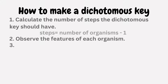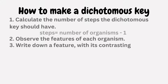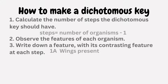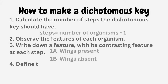Step three: write down a feature with its contrasting feature at each step. For instance, if one choice indicates wings present, the opposite choice should be wings absent. Repeat this process with different features at each step.